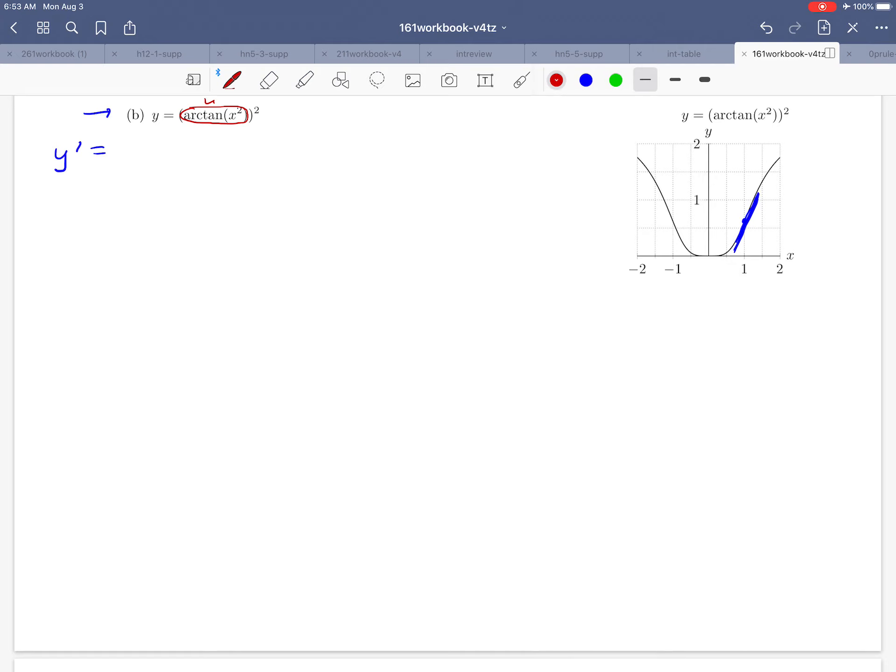We're going to start by taking the derivative of the whole function, which looks like u squared, and the derivative of u squared is just 2u. So we're going to get 2 times arctangent of x squared times the derivative of arctangent of x squared.